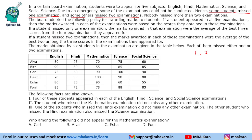The board adopted the following policy for awarding marks to students. If a student appeared in all five examinations, the marks awarded in each exam were based on the scores they obtained. If a student missed only one examination, the marks awarded in that examination were the average of the best three scores from the four examinations they appeared in. If a student missed two exams, the marks awarded in each of those examinations were the average of the best two among the remaining three.